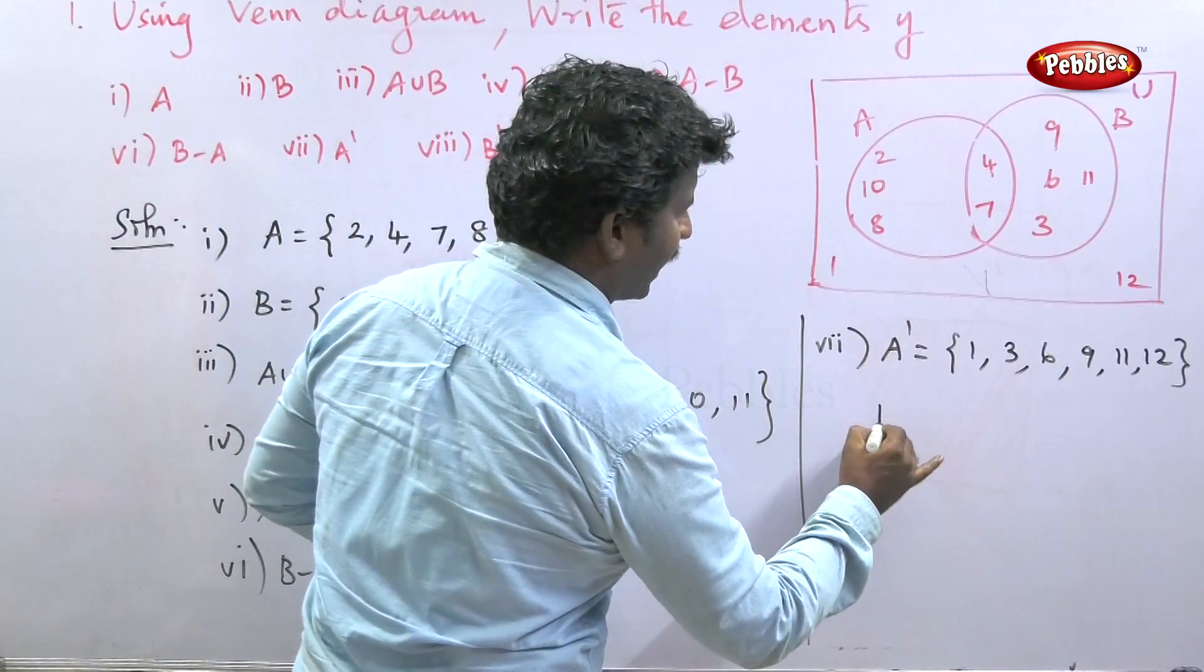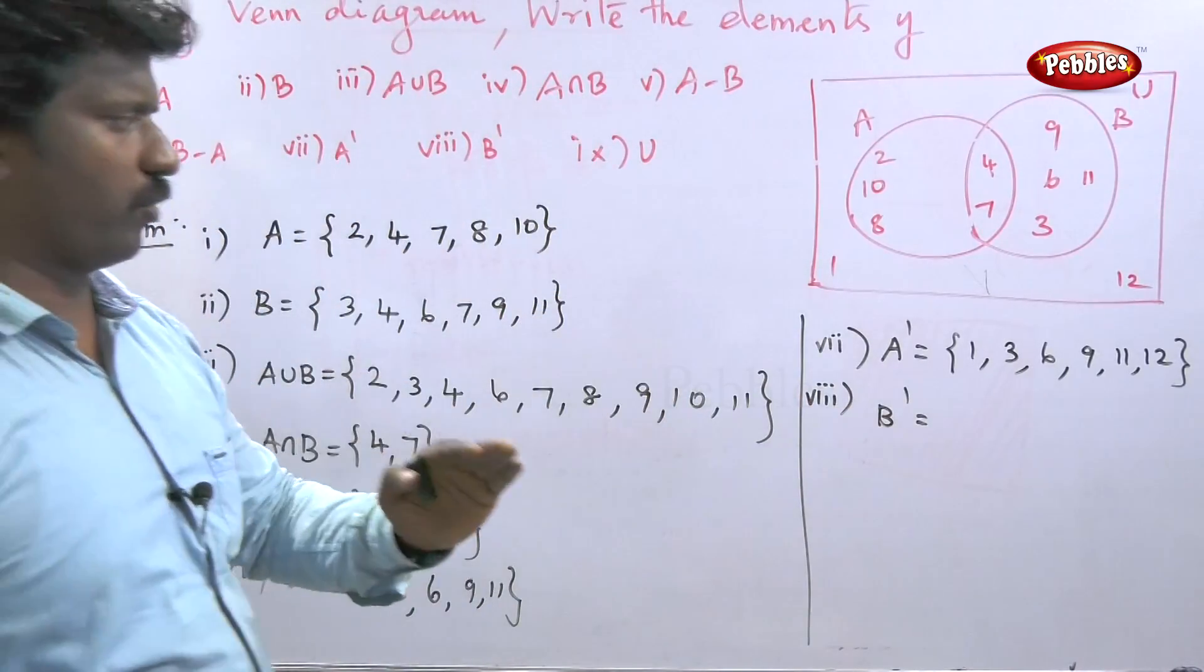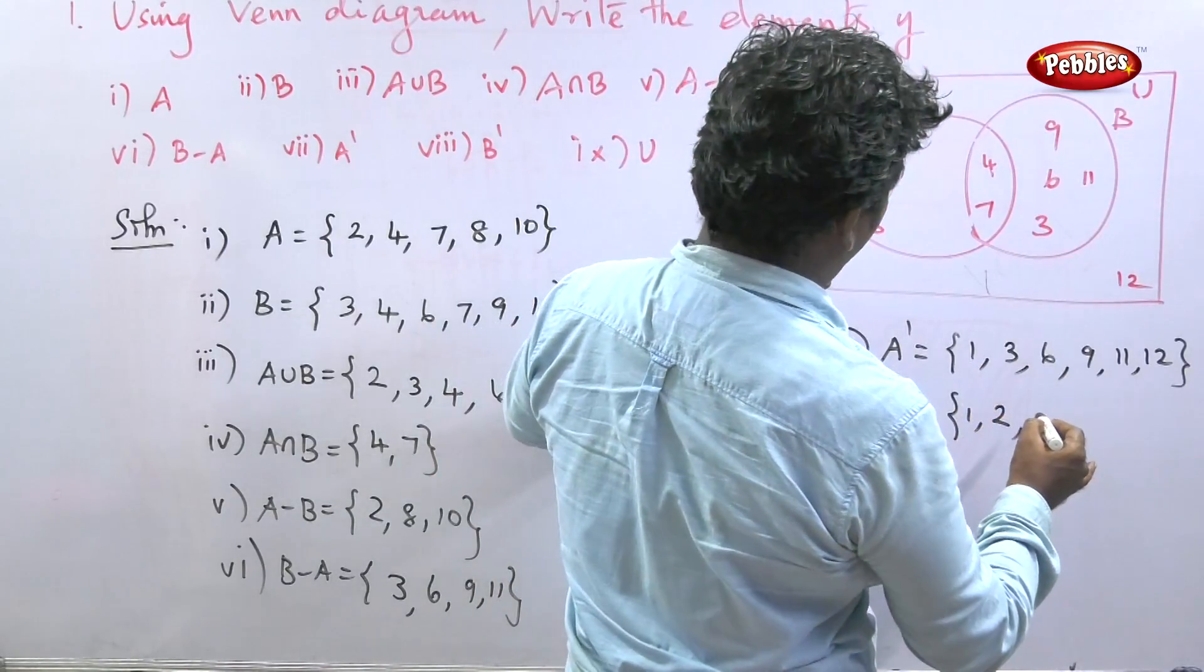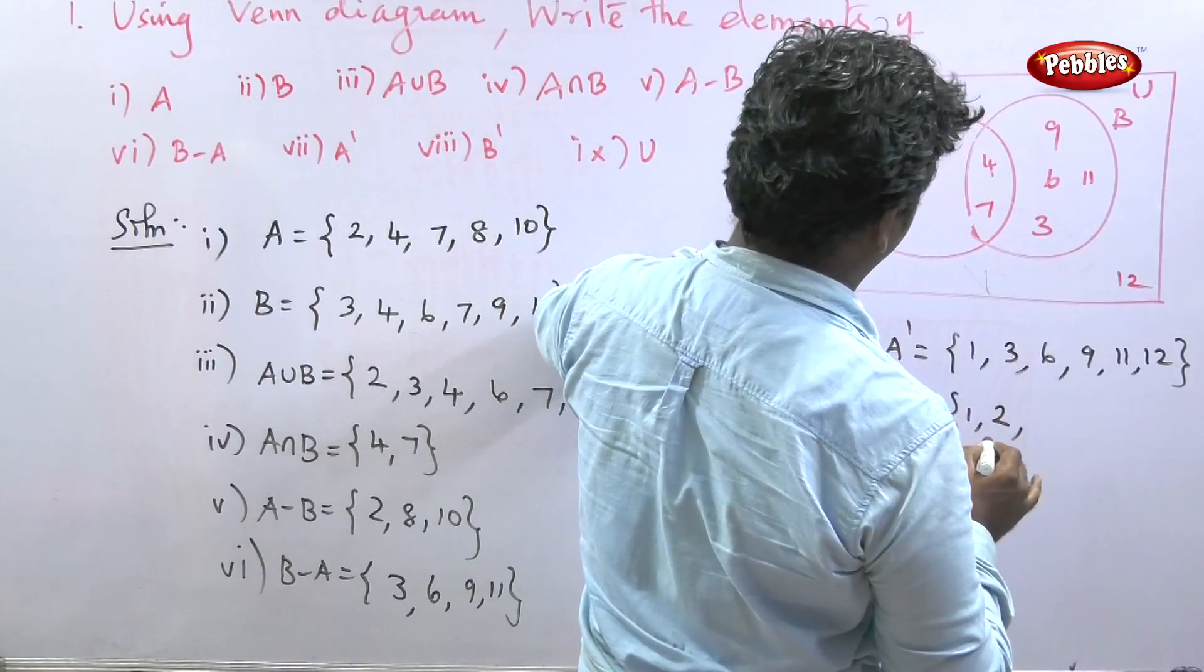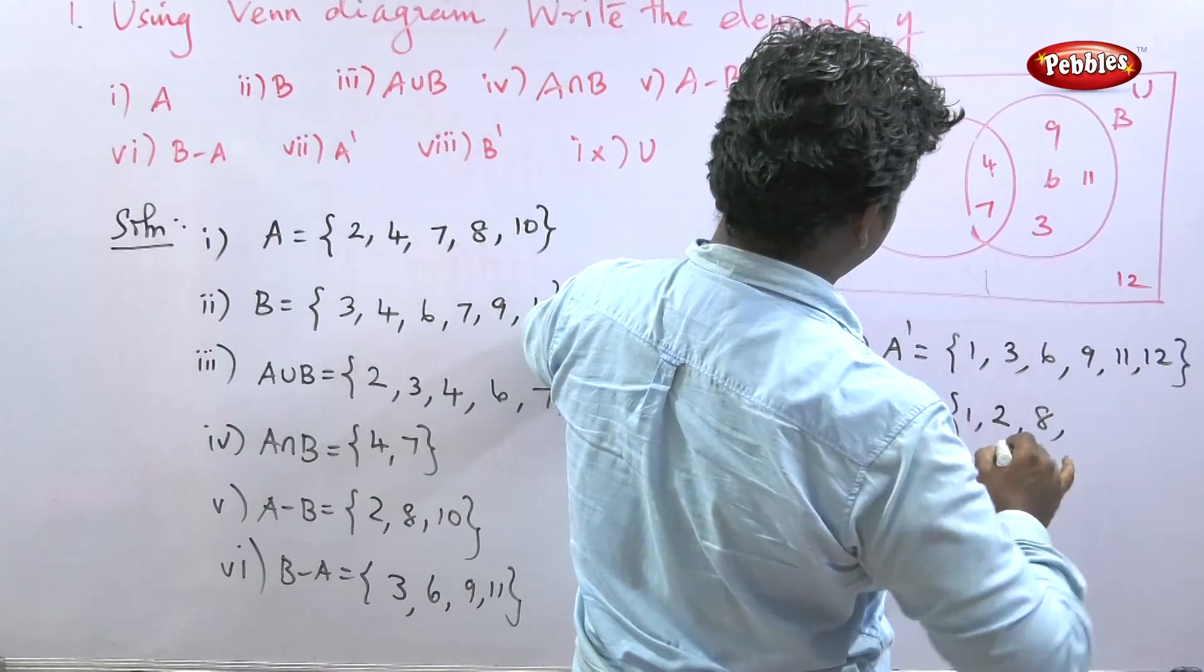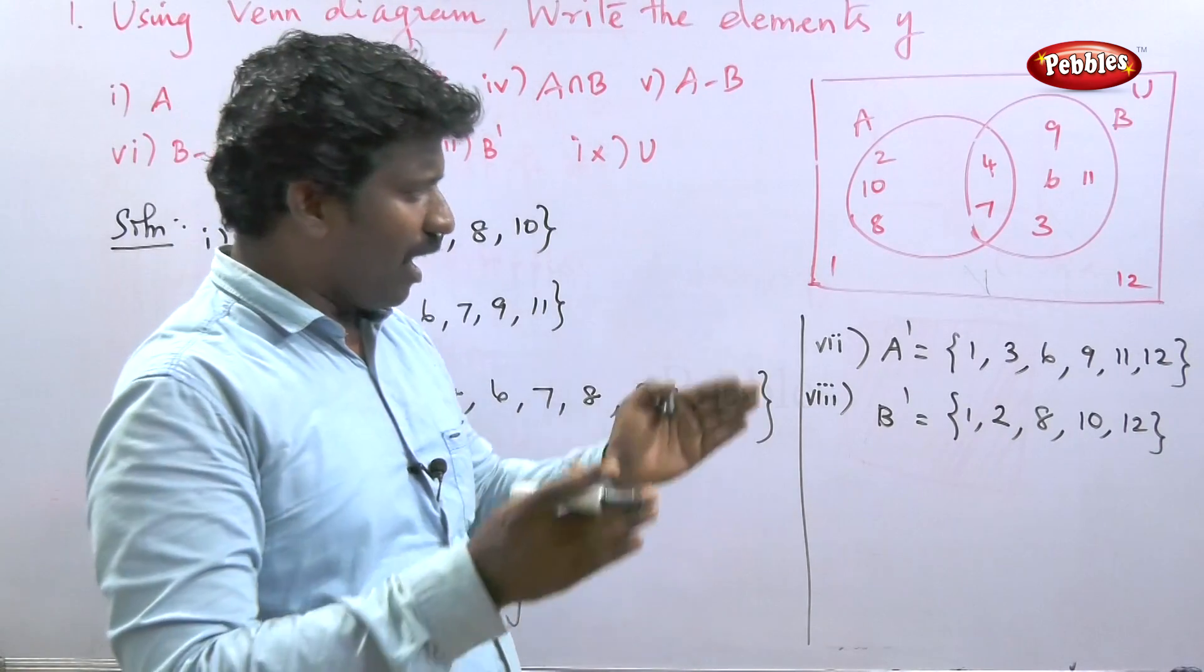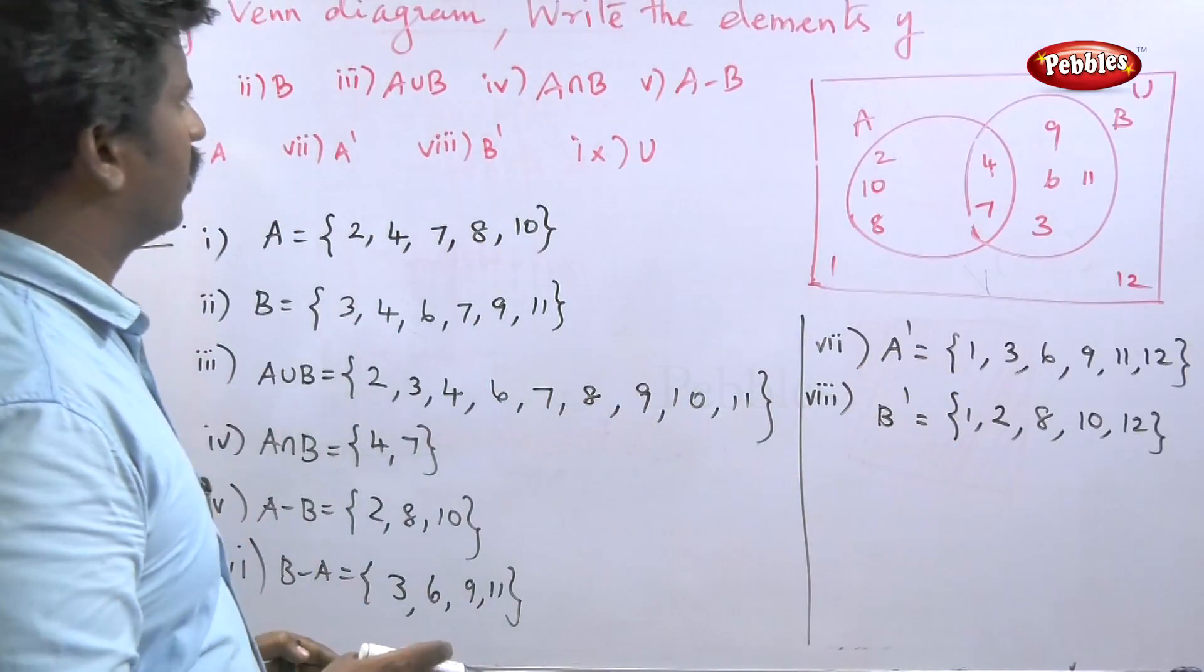The next question is B dash. B elements to avoid: 3, 4, 6, 7, 9, 11. Elements not in B from the whole set: 1, 2, 8, 10, 12. This is B dash.